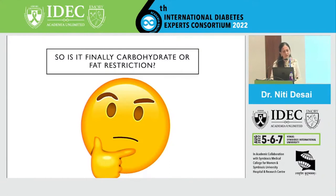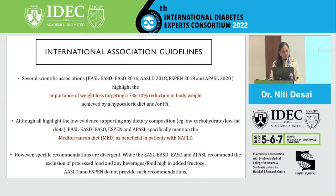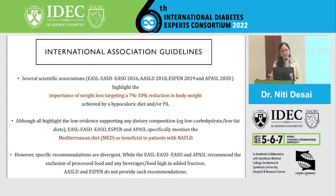So finally, is it carbohydrate or fat that is the villain? By the current evidence taken together, the data supports the use of diets with reduced content of saturated fat, free sugars, and refined carbs. It's not one or the other — both carbohydrates and fats need to be reduced. Scientific and international association guidelines also highlight targeting weight reduction in the range of 7–10%, and in practice we generally ask patients to start with 5–10% weight loss.